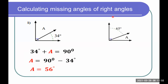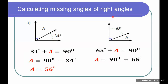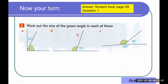Now try another one. Step one: write the mathematical statement, and then subtract the given angle from 90 degrees. 90 minus 65 is 25 degrees. Always remember that in a right angle, the sum of the angles must be 90 degrees. You can try this one — it's on page 89 of your student book. Find the measure of the green angles and post your answer in the class drive folder.